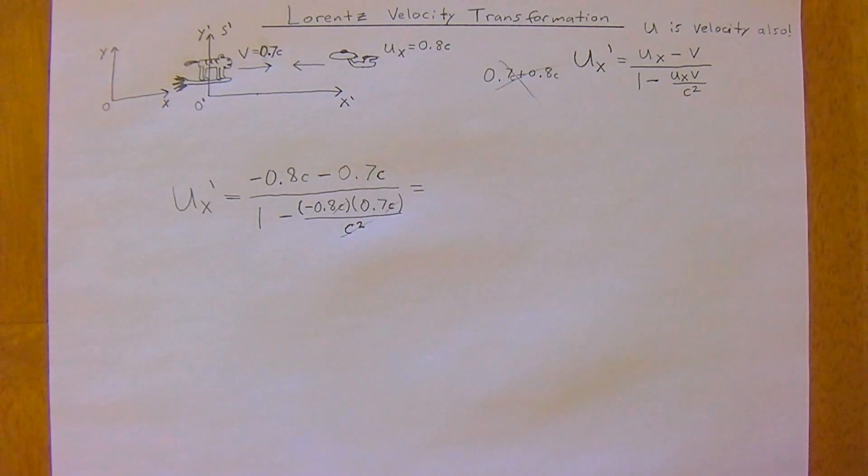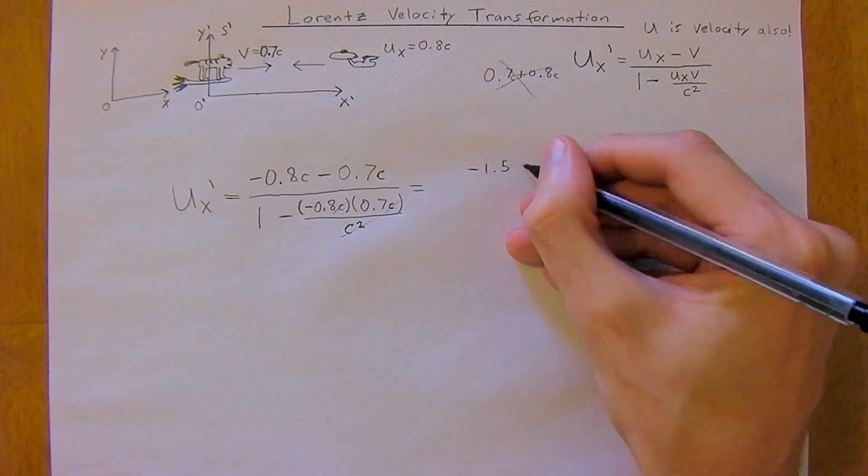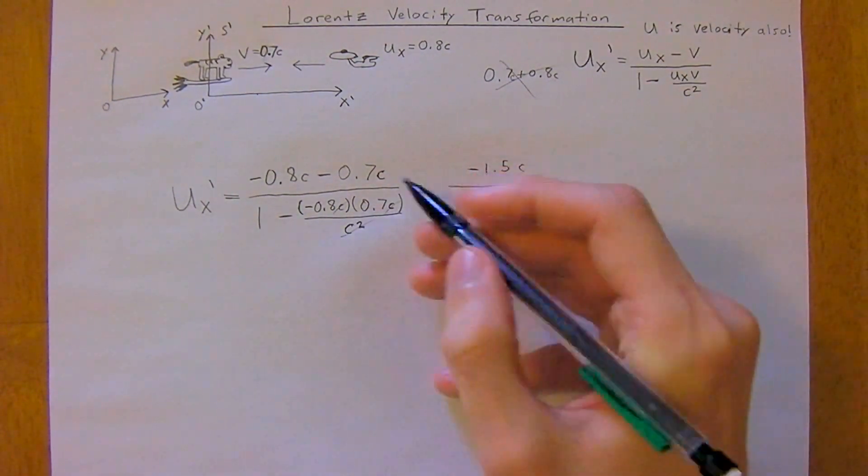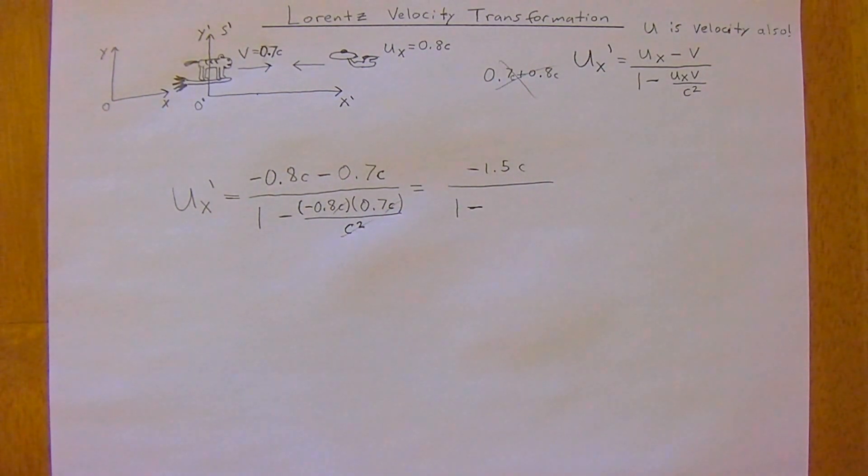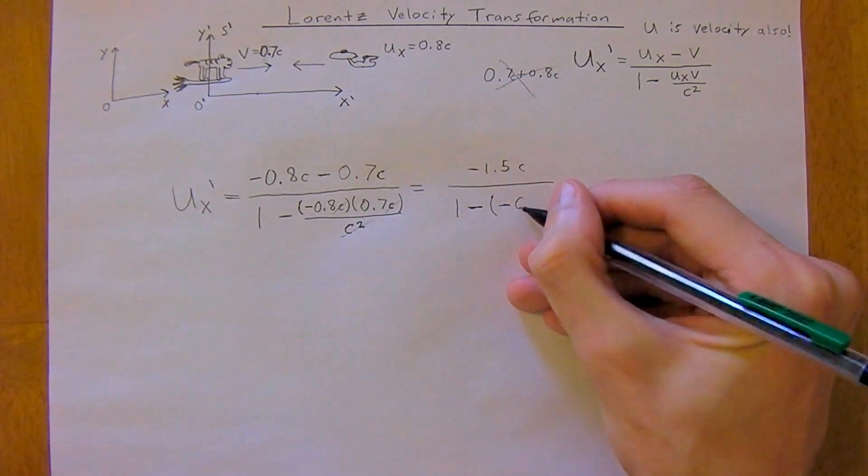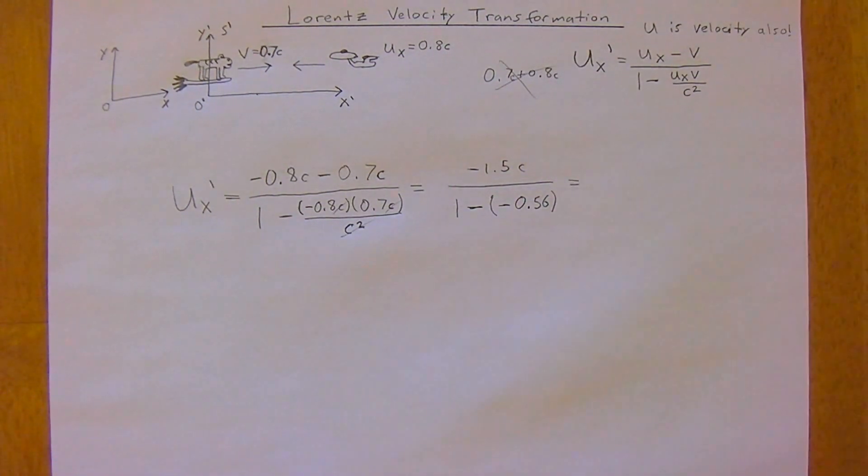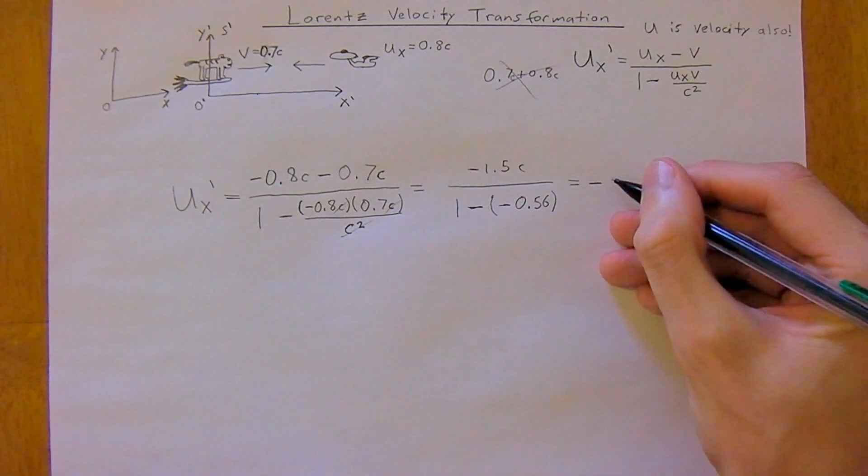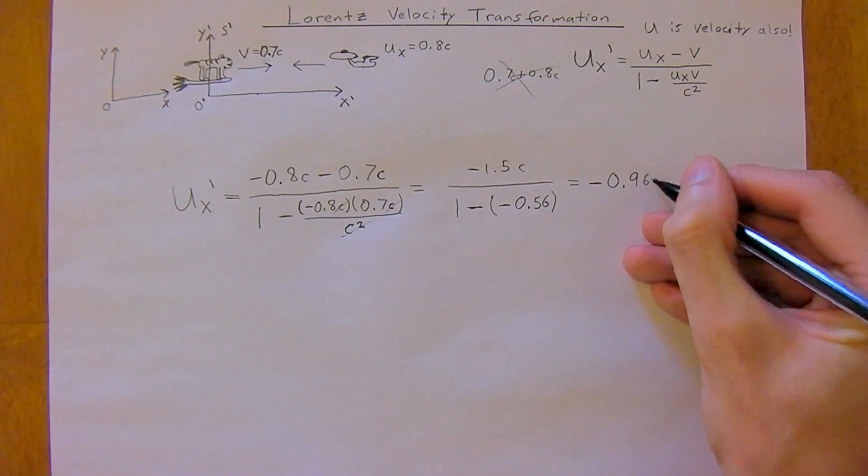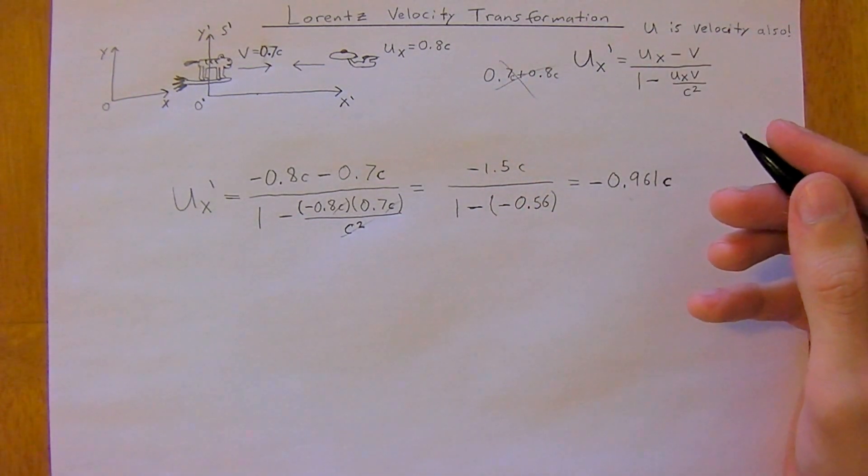What we're going to get here is these C's are going to cancel. We get negative 0.8 minus 0.7, so negative 1.5C divided by 1 minus—we'll multiply these now—so negative 0.8 times 0.7, so minus a minus of 0.56, and the C's have canceled. This will ultimately be equal to 1 plus 0.56 on the bottom of the denominator, so negative 0.961C.